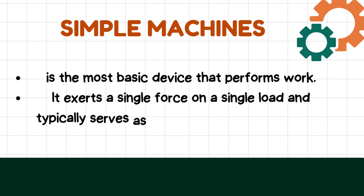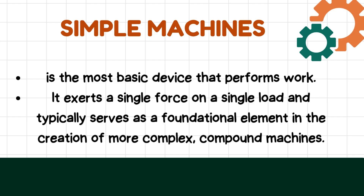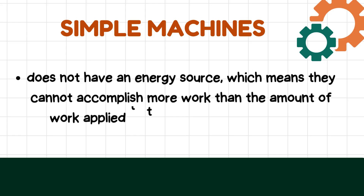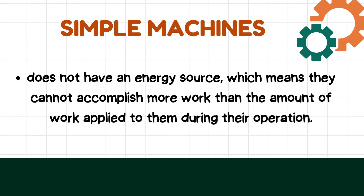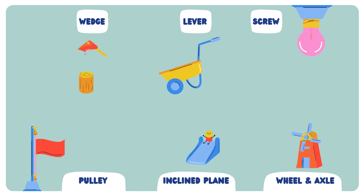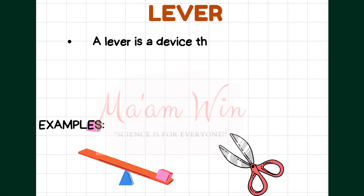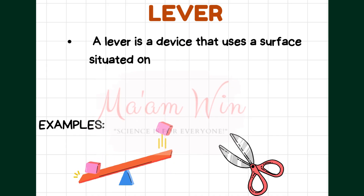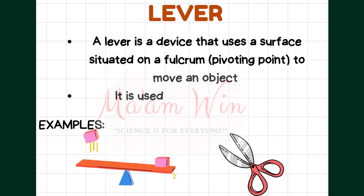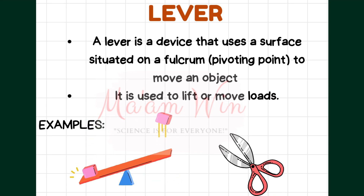When we say simple machine, it is the most basic device that performs work. It exerts a single force on a single load and typically serves as a basic element in the creation of more complex compound machines. It does not have an energy source, which means they cannot accomplish more work than the amount of work applied to them during their operation. Here are the six categories of simple machines. Number 1: We have the lever — a device that uses a surface situated on a fulcrum to move an object. It is used to lift or move loads. An example is scissors.